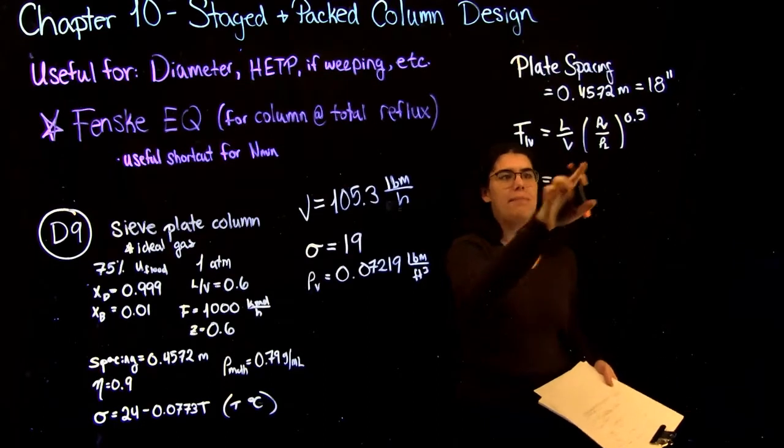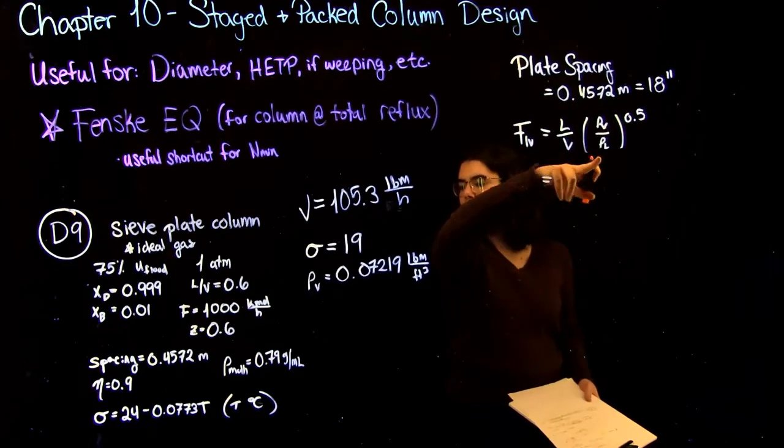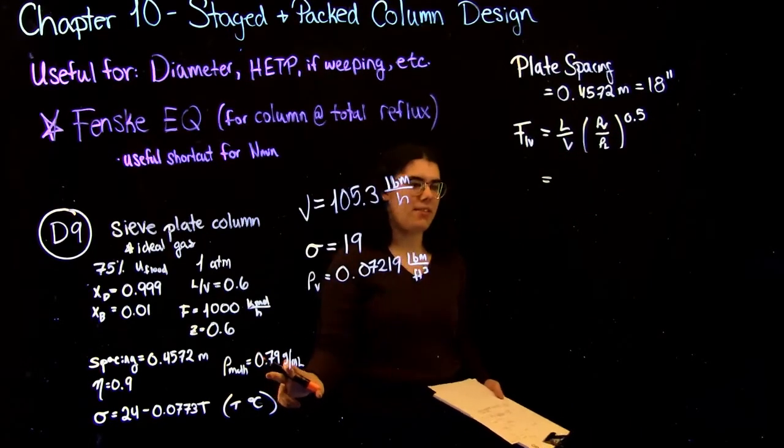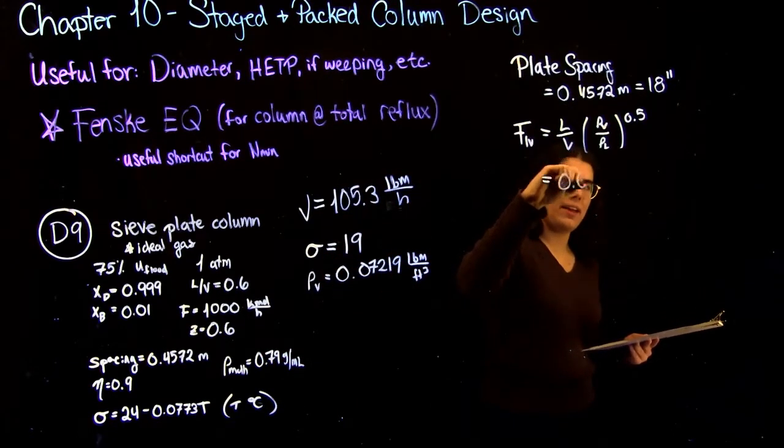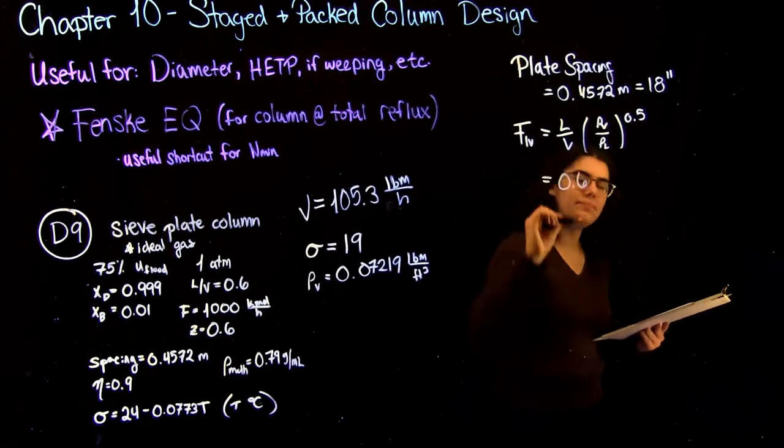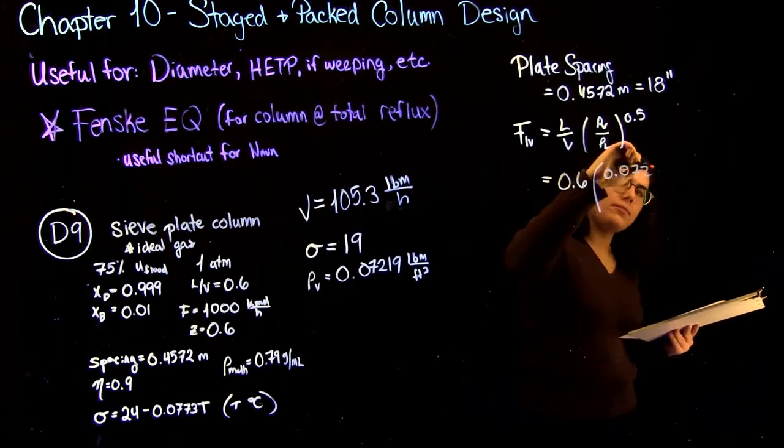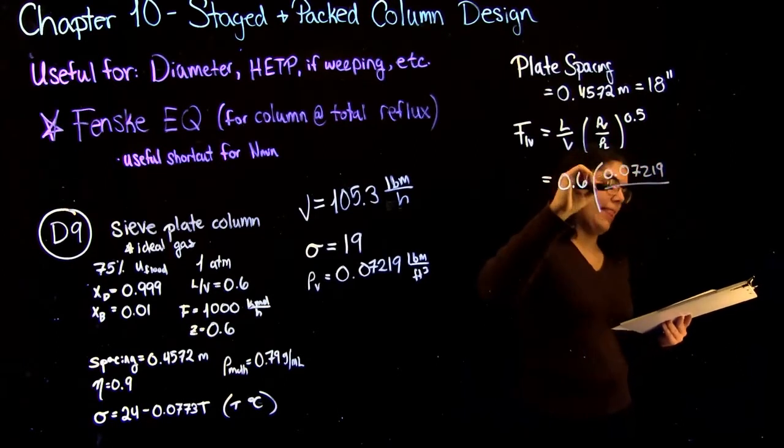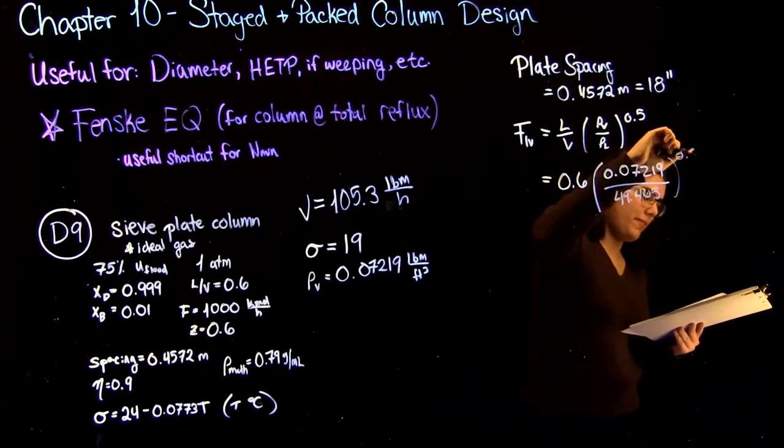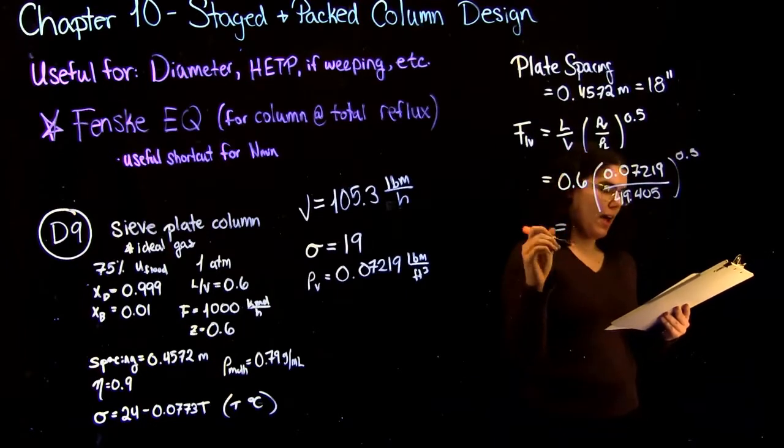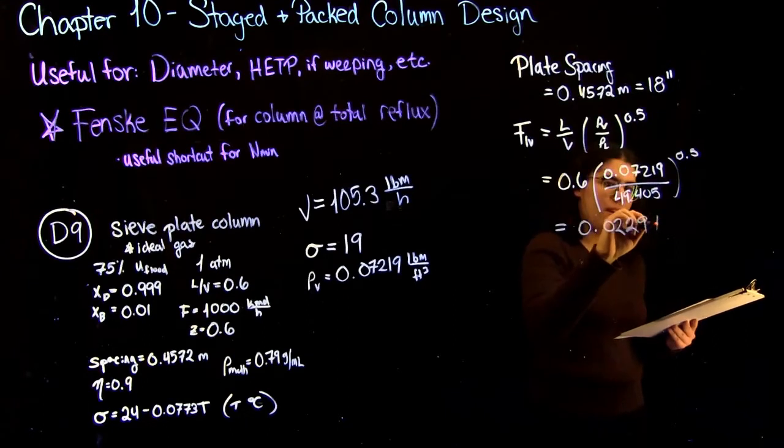And we have all the values calculated from before. So if you just plug everything in, the only extra step you're going to have to do is in order to find your density of your liquid, you're just going to use the one that was given and convert it to imperial units again. So plugging everything in, we have L over V is 0.6 from before. And then we have our vapor density calculated from before also. And then our liquid density, all to the power of 0.5. So if you plug this in, you'll get that you need to read off of your x axis, 0.02294.